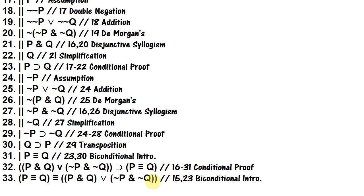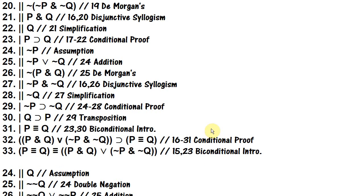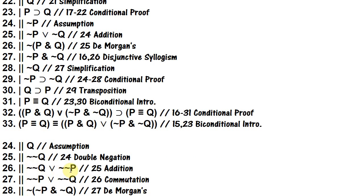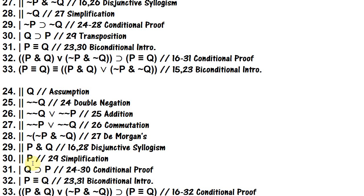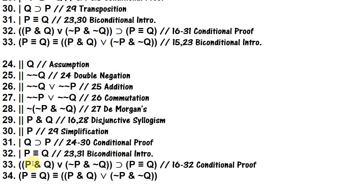Now let's look at an alternate way to finish off this proof. On line 24 we assume q instead of not p. We use double negation to get 'not not q,' then addition to get 'not not q or not not p,' commute it to 'not not p or not not q,' apply DeMorgan's to get 'not (not p and not q),' use disjunctive syllogism to get 'p and q,' and then simplify to get p. The rest of the proof proceeds the same way.